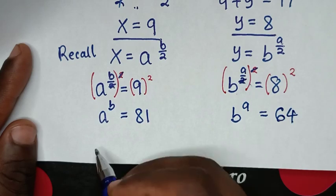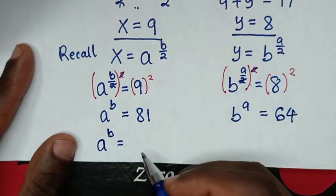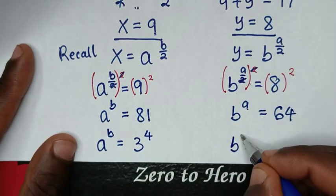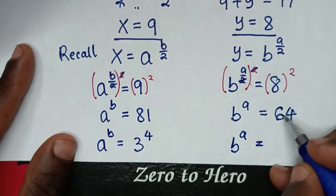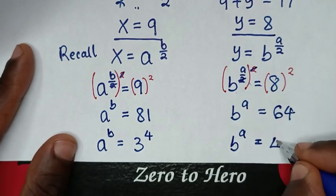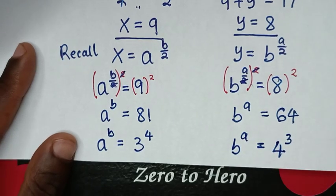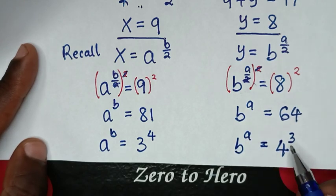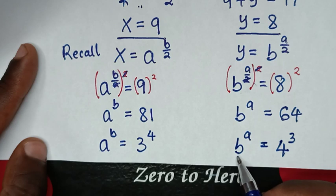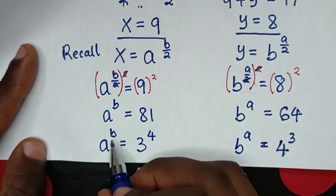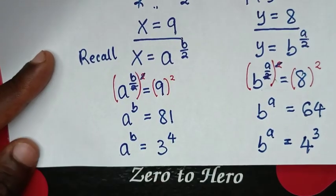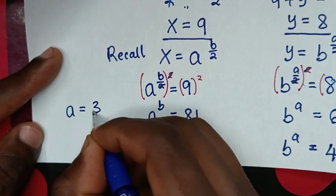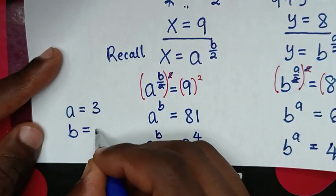Now, a power of b equals 81, which is the same as 3 power of 4. And b power of a equals 64, which is the same as 4 power of 3. Comparing bases and powers, a equals 3 and b equals 4.